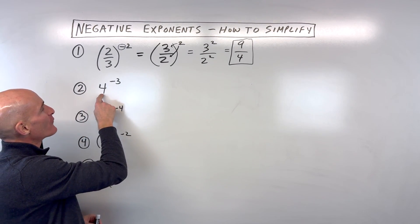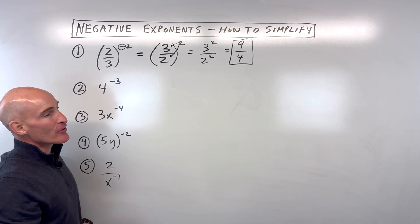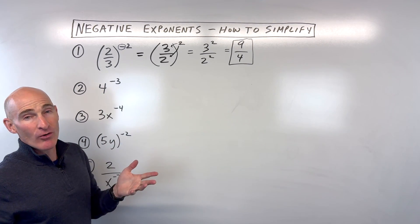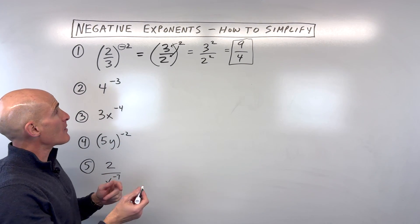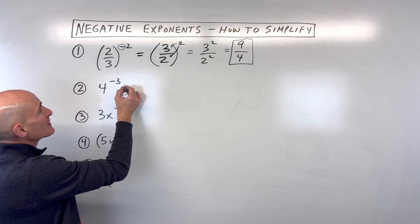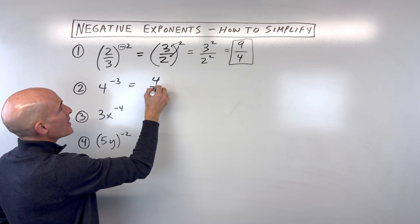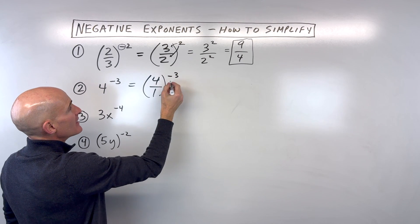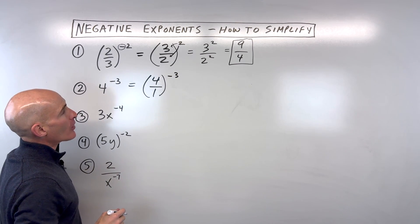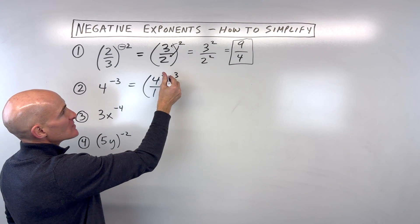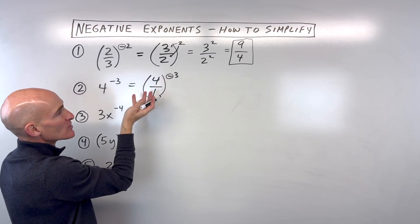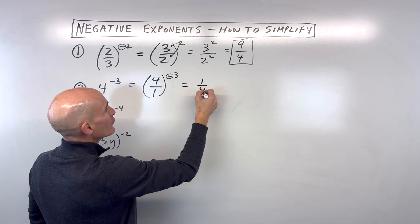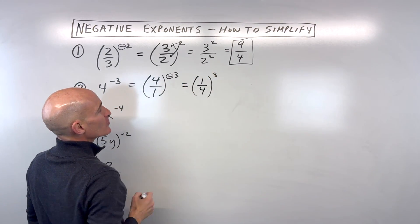Let's look at number two. We've got four to the negative third power. Now, you might say there is no fraction involved. Well, remember, everything can be written as a fraction by putting it over one. So we could think of this as four over one — that's still equal to four to the negative third power. Now, when we see that negative, it tells us to take the reciprocal of the base, so we're going to flip that over. So it becomes one over four to the positive three power.